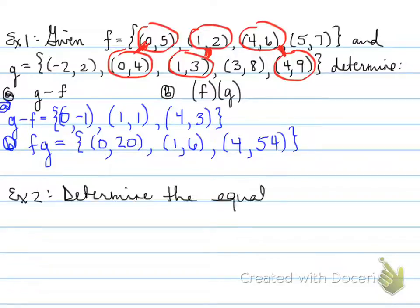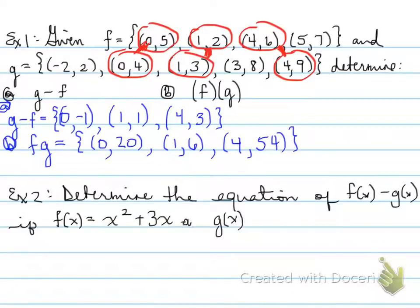All right, example number two. Determine the equation of f(x) minus g(x), if f(x) is equal to x squared plus 3x, and g(x) is equal to x squared minus 7x plus 12.